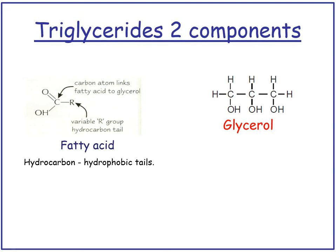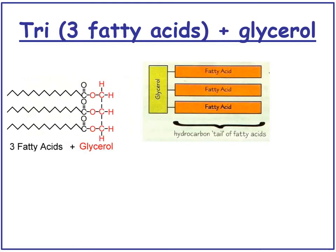Triglycerides have two components. They have the fatty acid, which is the RQ group - a carbon atom double-bonded to an oxygen and a single bond to an OH group - and then a variable group called the R group, which is the hydrocarbon tail. The hydrocarbon tails are hydrophobic tails; hydrophobic means scared of water, so they will always face away from the water. Then there's a glycerol molecule, which is CCC with three OH groups. Triglycerides are made of three fatty acids and one glycerol molecule.